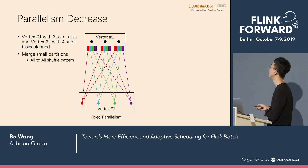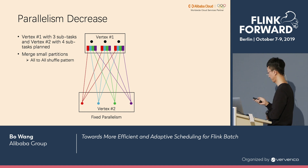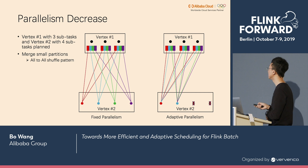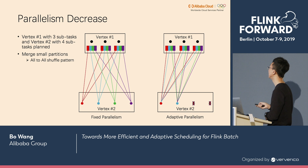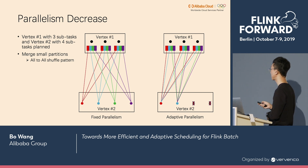In another example, vertex 1 consists of three sub-tasks and vertex 2 consists of four sub-tasks. Since the shuffle pattern between the vertices is all-to-all, each sub-task of vertex 1 produces four partitions. Since the input data size is extremely small, we decrease the parallelism to two. Each sub-task will then process two partitions: sub-task 1 of vertex 2 processes the red and blue partition, sub-task 2 processes the green and purple partition, and the last two sub-tasks are cancelled.